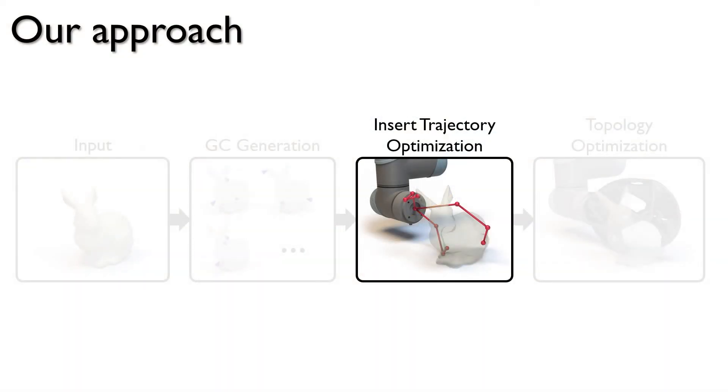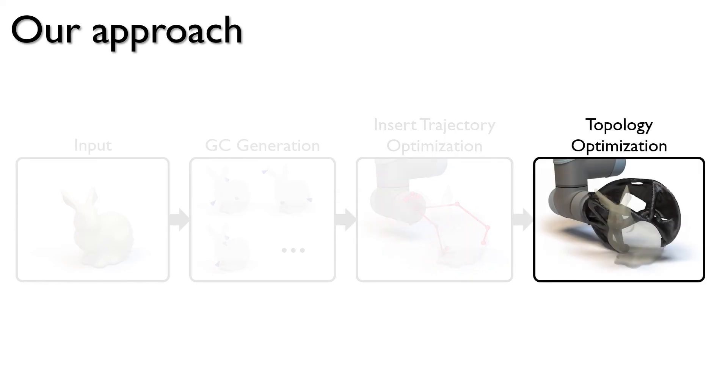Technically, this optimized skeleton and the insert trajectory would serve as a working gripper. However, it cannot be fabricated and cannot withstand heavy payload because it is too thin. Our last step performs topology optimization to obtain a fabricable and sturdy gripper.